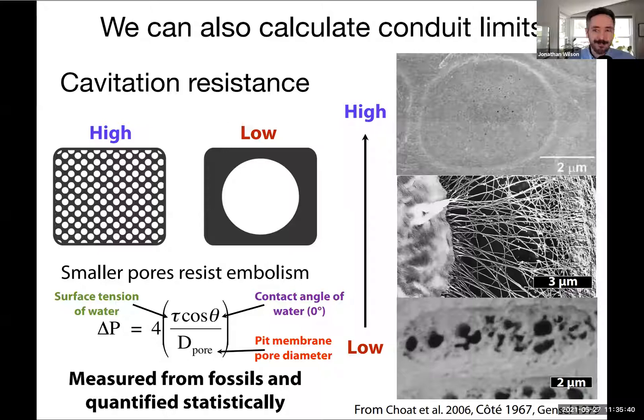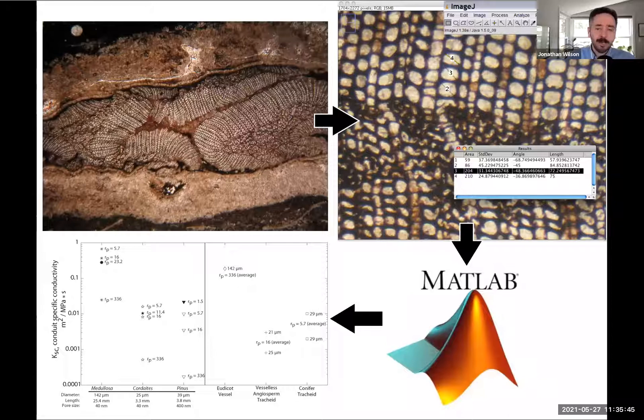We use image analysis of fossils, take values by measuring conduits, and put them in computational models. Effectively, this is quantitative functional morphology for plants. I'm going to build up from SEMs to larger-scale processes that we understand from these late Paleozoic plants. But before we dive into the data, it's helpful to step back and define some terms.